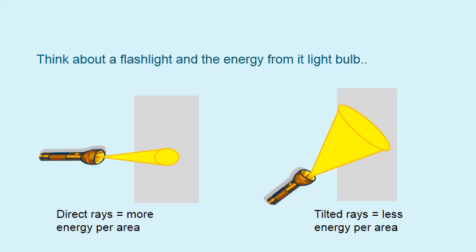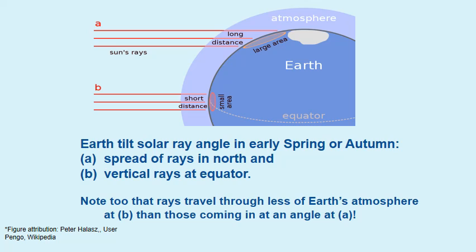Think about a flashlight: if you shine it directly on a wall, it illuminates a certain area. Tilt that flashlight toward the ceiling, and as the tilt increases, the area the light bulb illuminates is spread over a larger area. Direct rays have more energy per unit area, while tilted rays have less energy per unit area. Another diagram illustrates the same principle for early spring or autumn, showing direct rays coming into the equator and longer rays spread over a larger area.